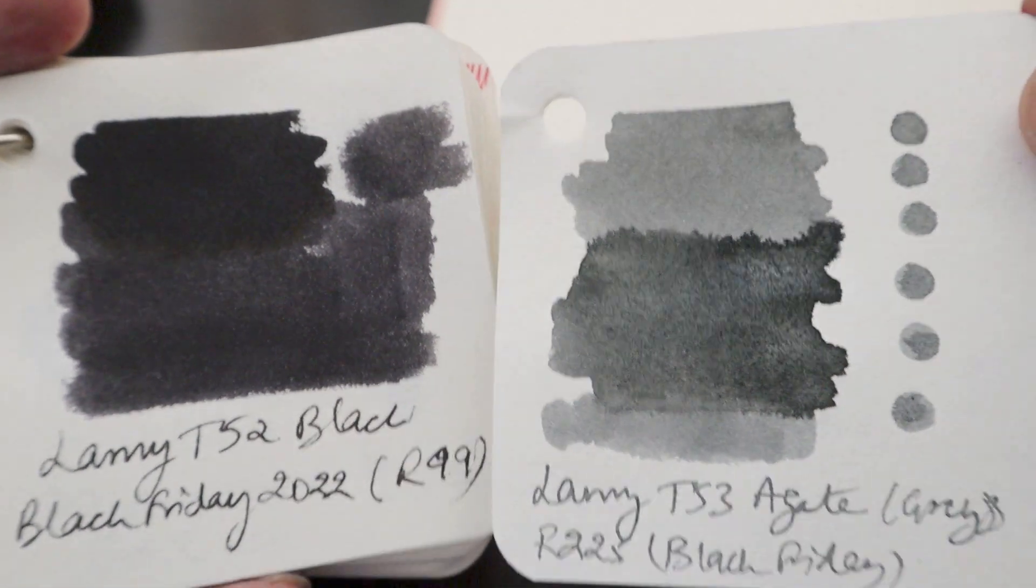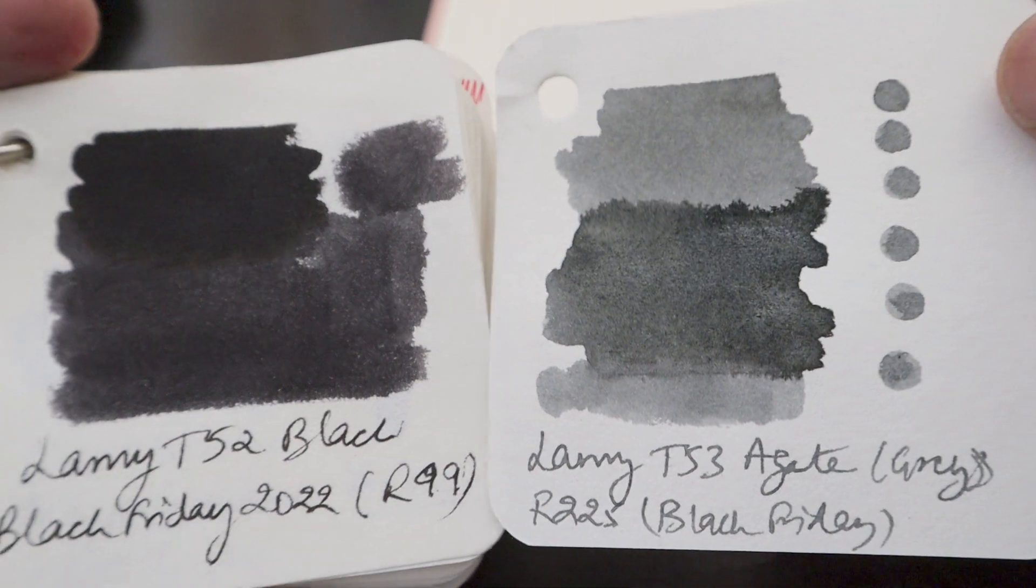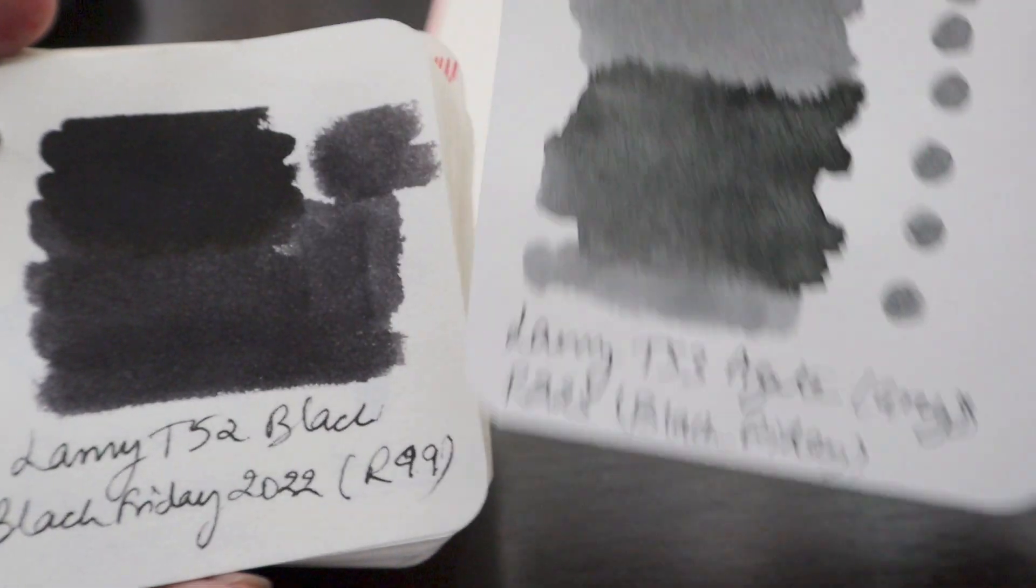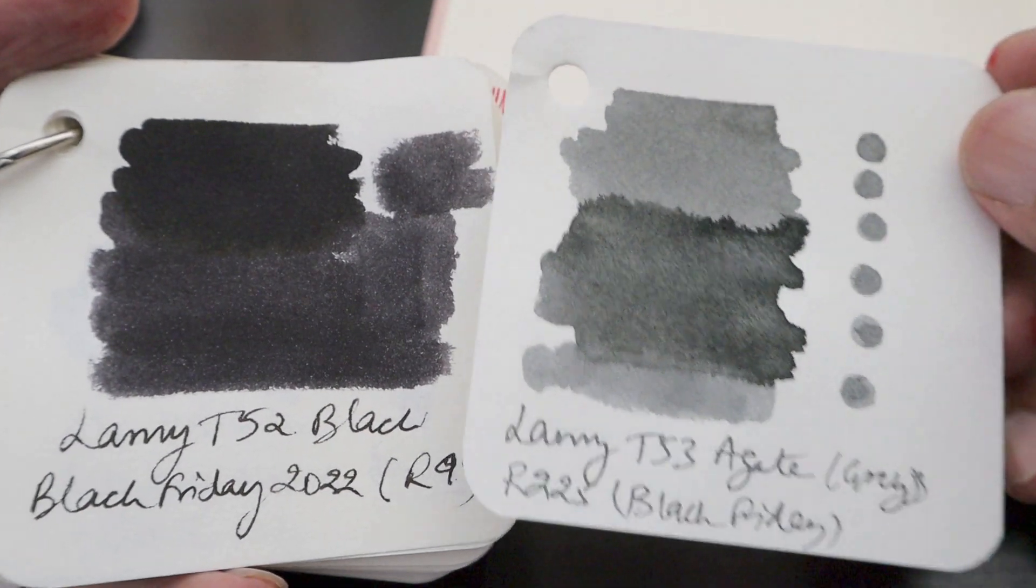This is the difference between the Agate Crystal Ink and the Lamy T52 black ink, which is the cheaper version and comes in a 50ml bottle. This comes in a 30ml bottle. This is how it looks like.